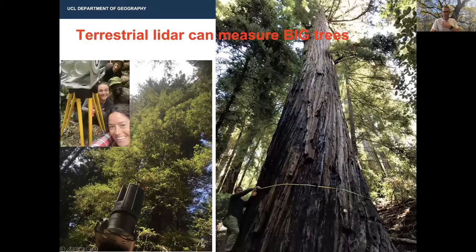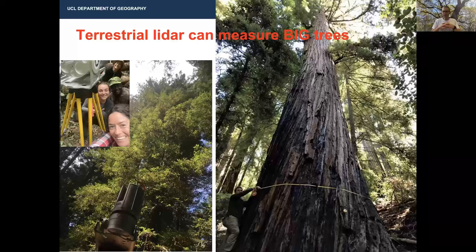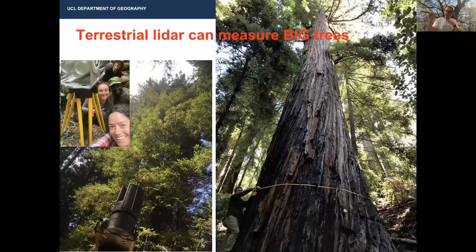The key tool is a terrestrial laser scanner (TLS), an instrument that sits on a tripod and can be moved through forests and different environments. It sends out millions of laser pulses every second and records the position of everything it hits, building up a very detailed three-dimensional picture around the instrument. Every time a pulse hits something, it records the exact distance and the precise XYZ coordinates of that point in three-dimensional space.